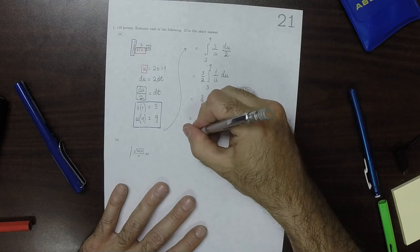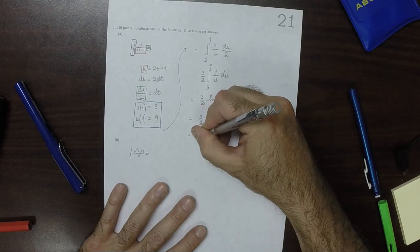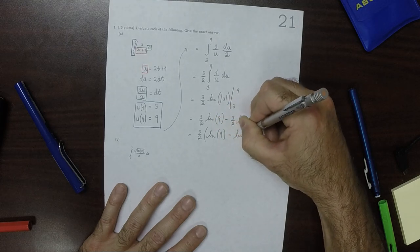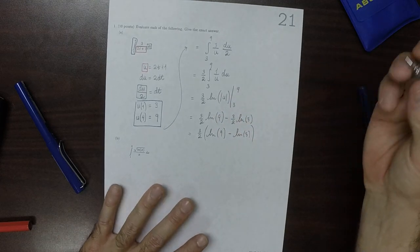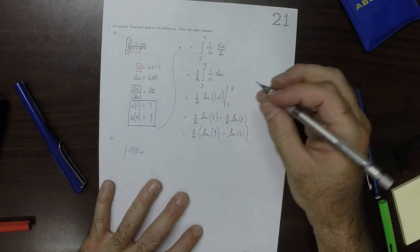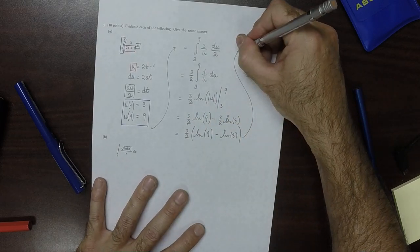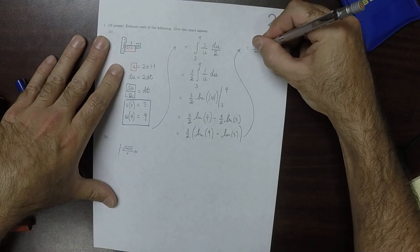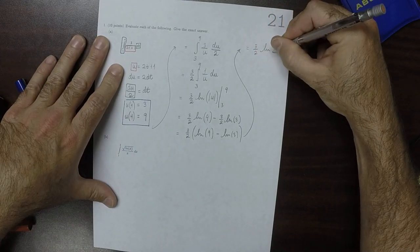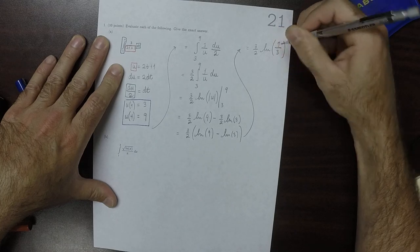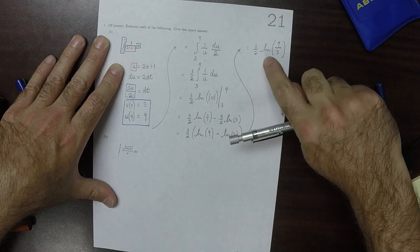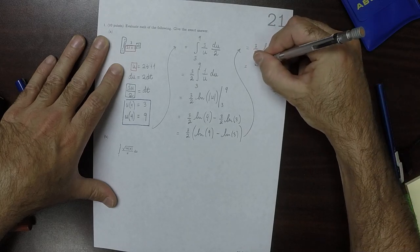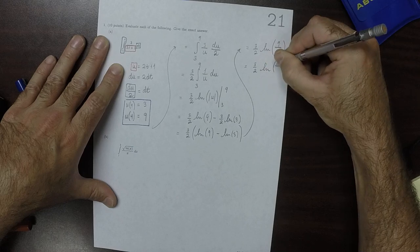But, the 3 halves can be factored out, so that would be 3 halves, and then log 9 minus log 3. And then using log rules, algebraic log rules, that can be written as 3 halves log of 9 divided by 3, because the difference of logs becomes a log of a quotient, and then 9 over 3 is 3. So this would be 3 halves log 3.